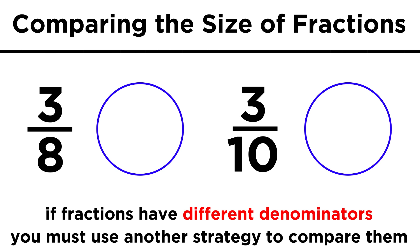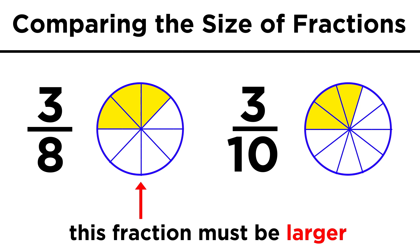Well, let's draw two circles. One can be divided into eight pieces, and the other into ten. Then let's shade three pieces in each circle. We can clearly see that three eighths covers a larger area, so it's the larger fraction.